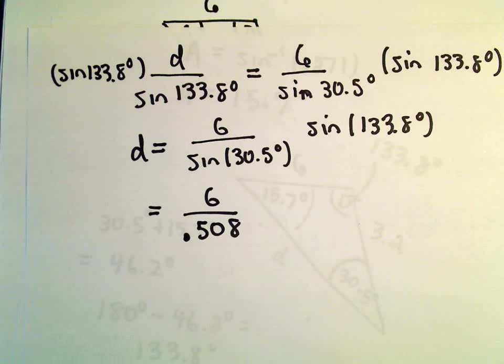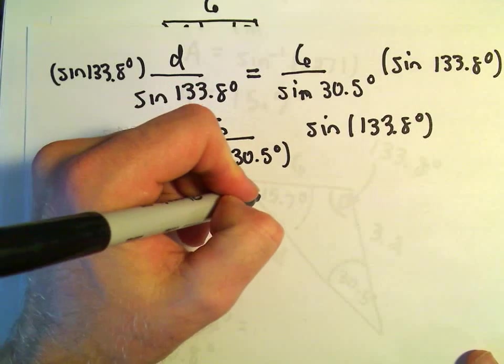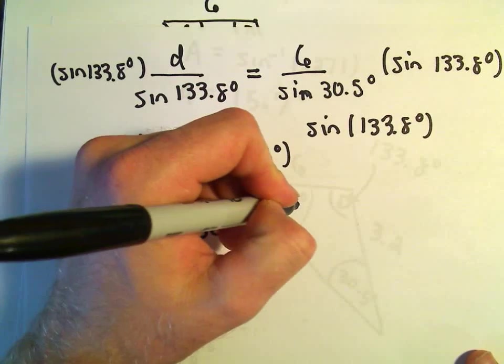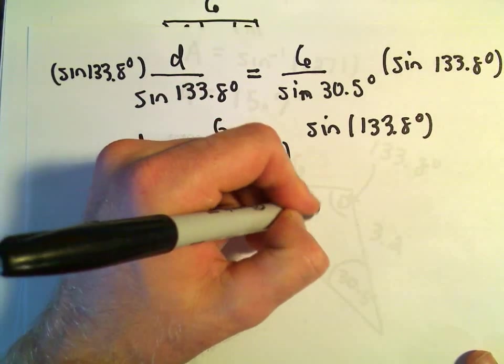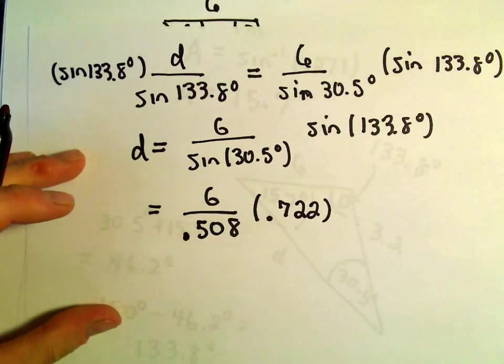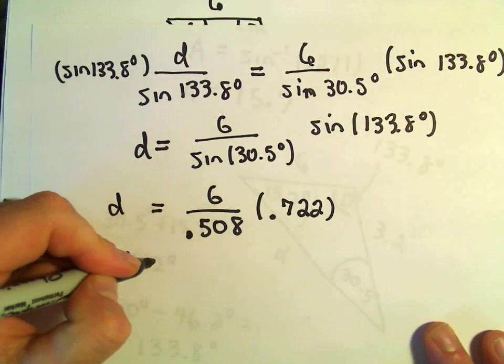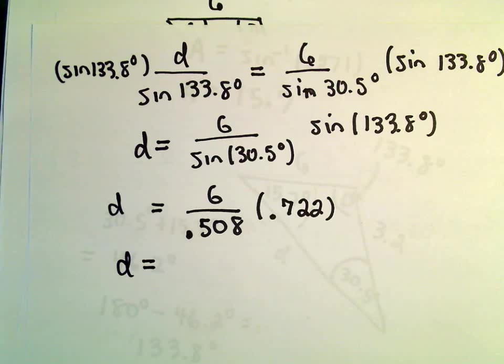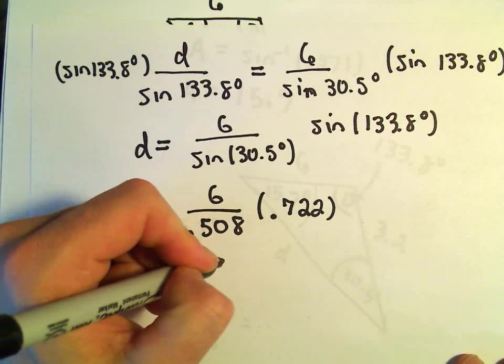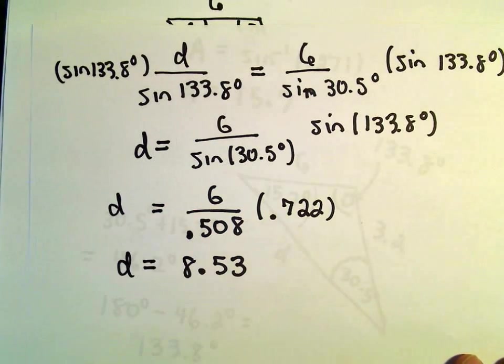So we have 6 over .508. I'll plug in the value for sine of 133.8. So sine of 133.8, I'm getting that to be .722 after rounding.